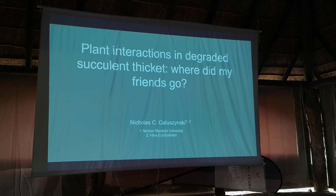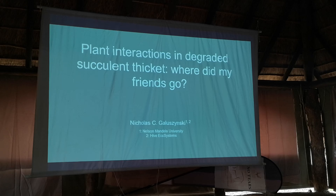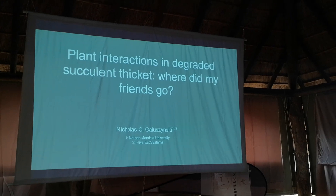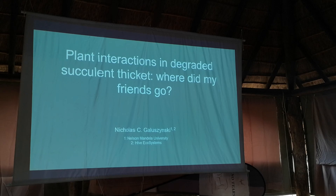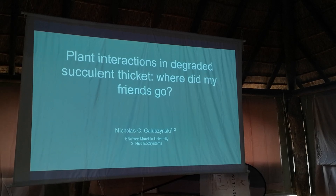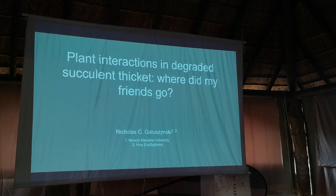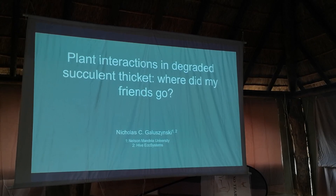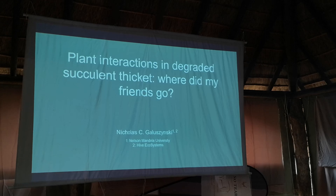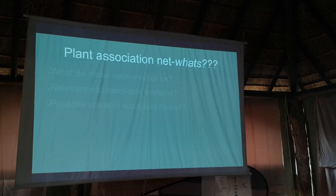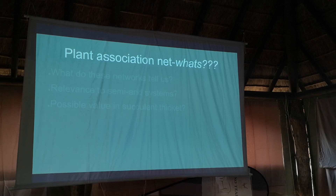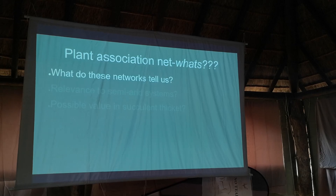If I can find who's hanging out with who in the thicket, maybe then we can start seeing why they're hanging out together. So this started as looking at plant associations in degraded succulent thicket, going from intact to moderately degraded to severely degraded, looking at whether our 'friends' are still there - because in severely degraded thicket there are very few friends.